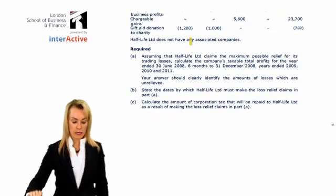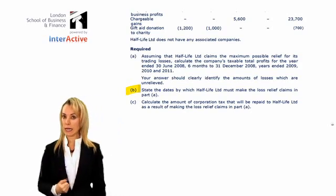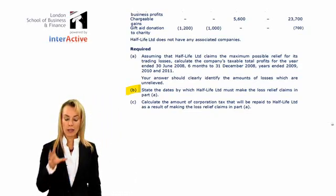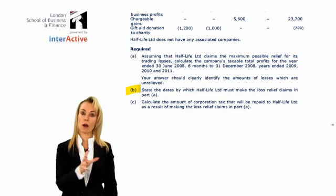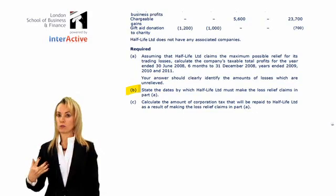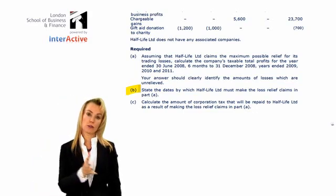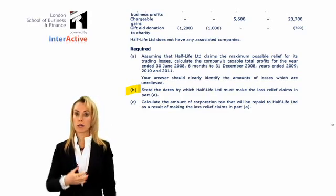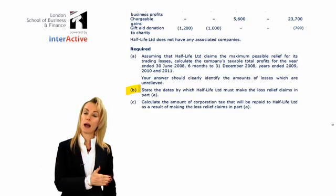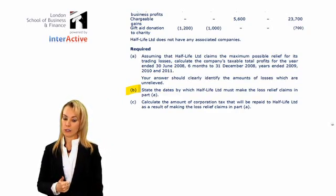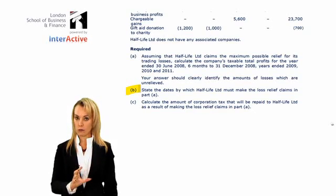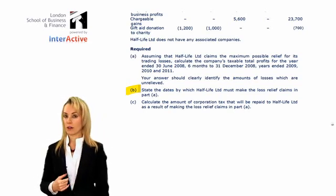You then work out your taxable total profits after deducting the losses. Part B asks you to state the dates for making the necessary claims. Part C wants you to work out the corporation tax refunds — so you work out the original CT in the CAPs you've carried losses back to, and from Part A you can work out the revised figure, then calculate your refund. Remember, only when you carry back a loss will that give rise to a CT refund. Have a go at that example — the answers are at the end of each chapter in your class notes so you can check whether you got it right.